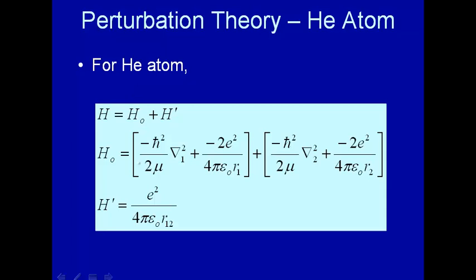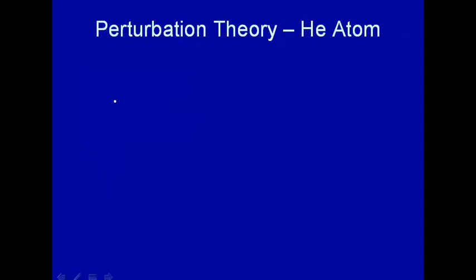For the helium atom, we had kinetic energy and potential energy for the first electron (subscript 1), and kinetic energy plus potential energy for the second electron (subscript 2). And then we have this pesky term: the interaction between the electrons, which depended upon the distance R12 between the two electrons. Let's go ahead and solve the Schrödinger equation for this unperturbed Hamiltonian.